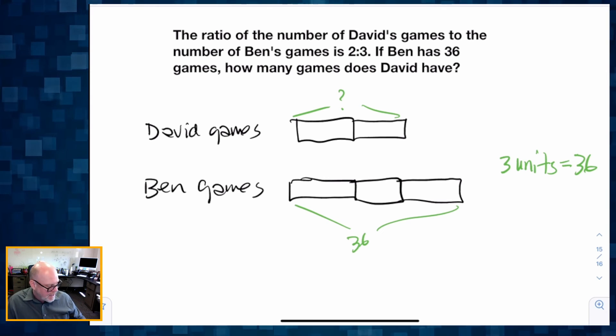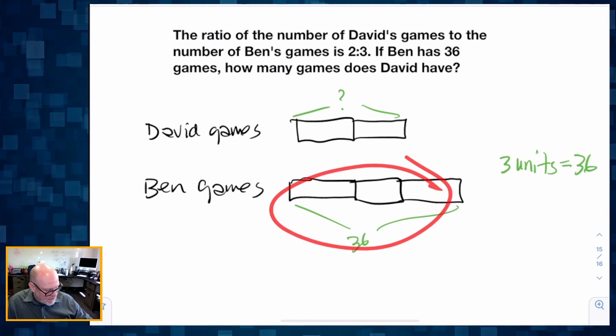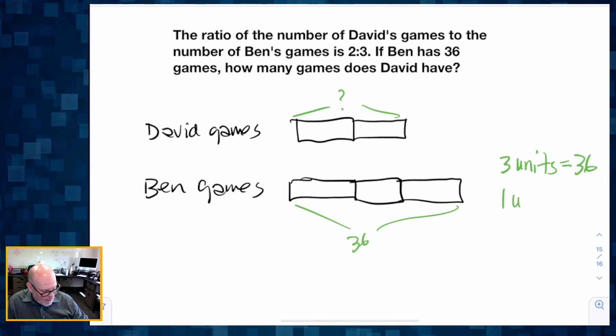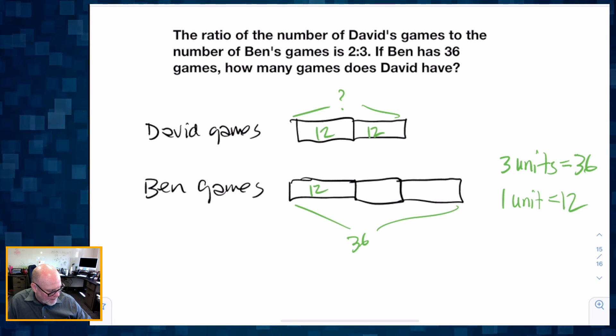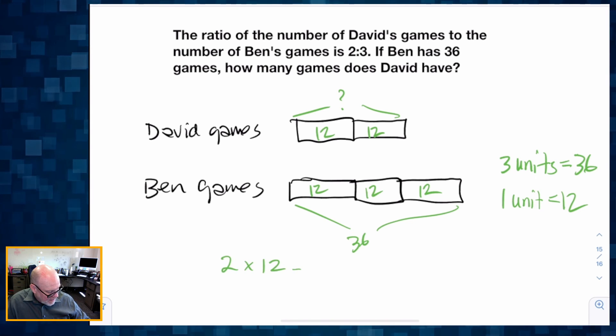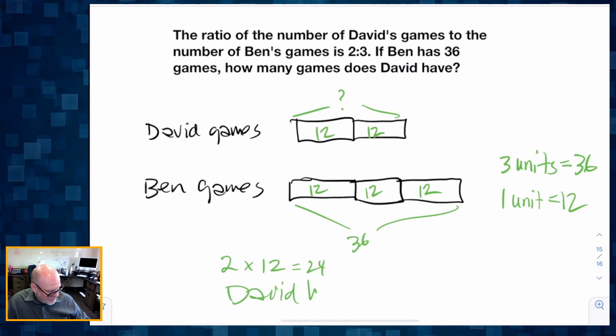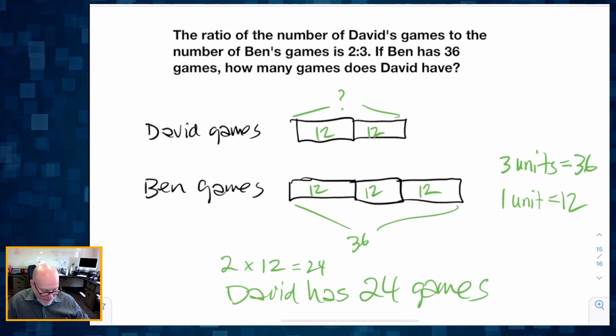Well, if three units represents 36, that means one unit represents 12. Again, 12 - gee whiz, I should have chosen better problems, whatever, I'm moving on. So if we want to know how many games does David have, well, 2 times 12 is 24, so David has 24 games.